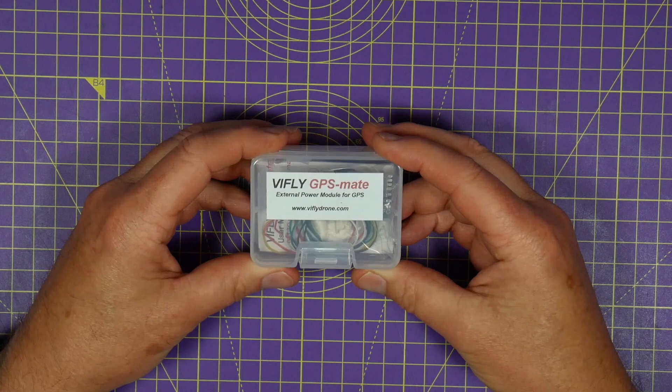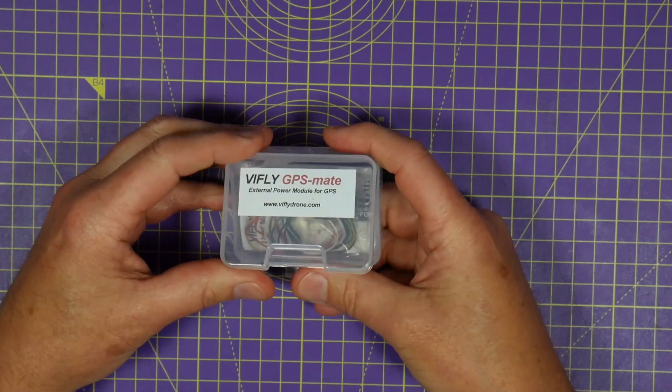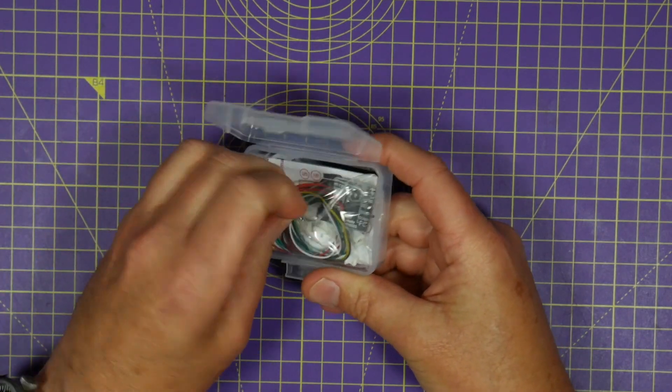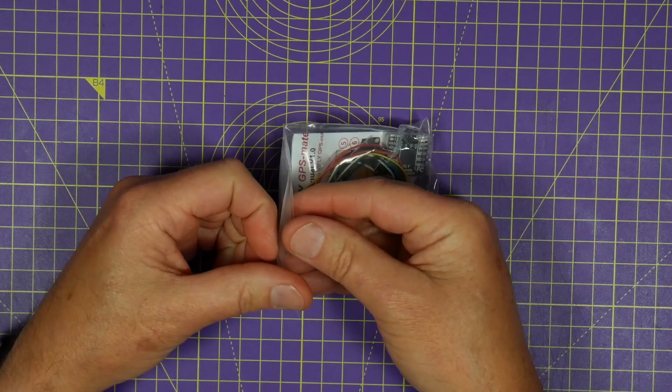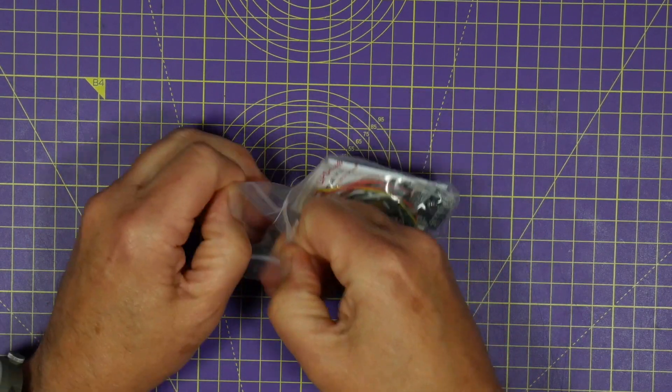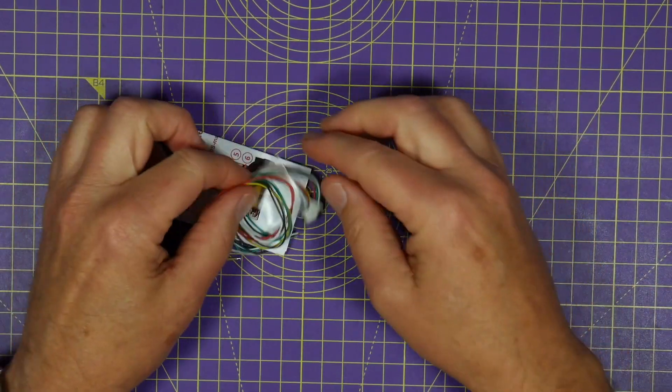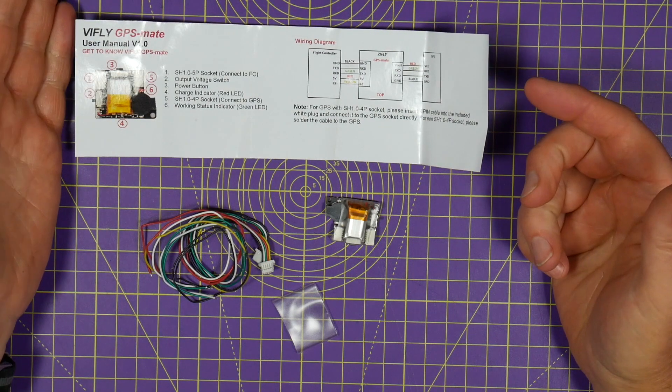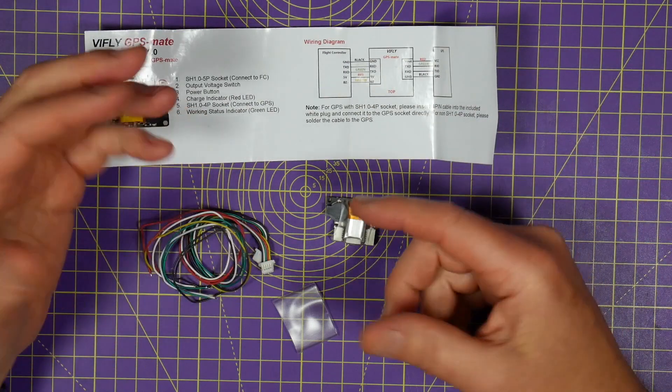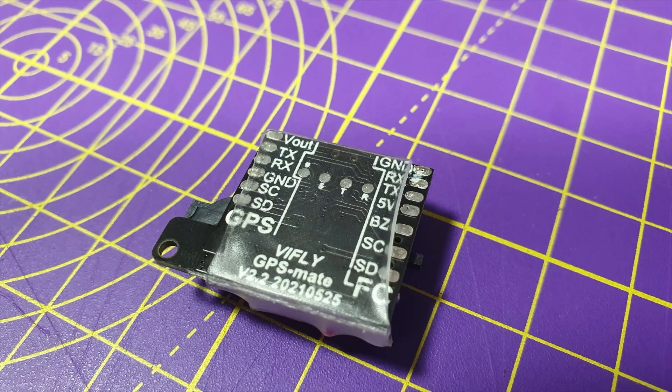Next up is the GPS mate. This is a clever solution to a really annoying problem. If you've ever used a GPS module on your drone for rescue mode in Betaflight or position hold and waypoints in iNav, you know just how irritating it is waiting for the GPS to acquire enough satellites to fly.